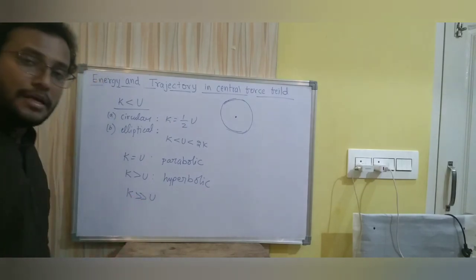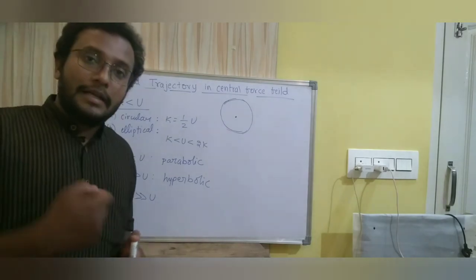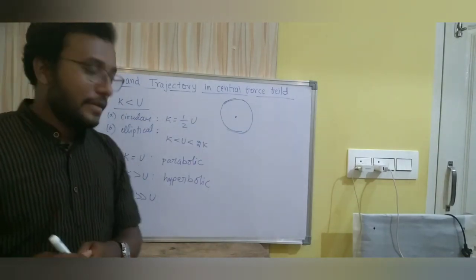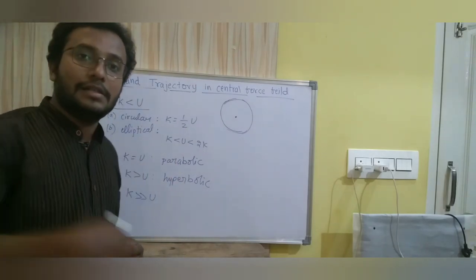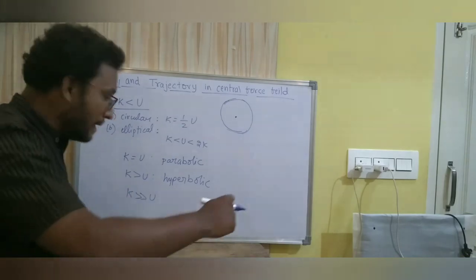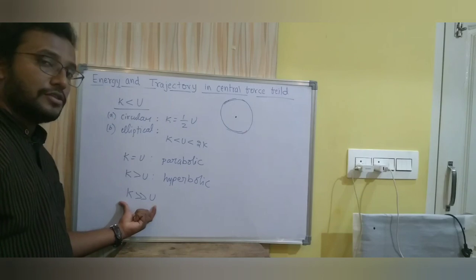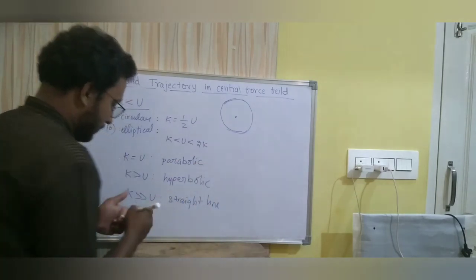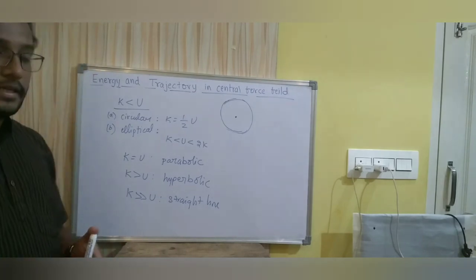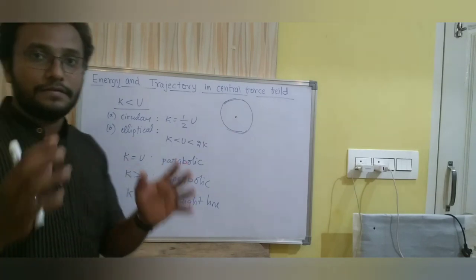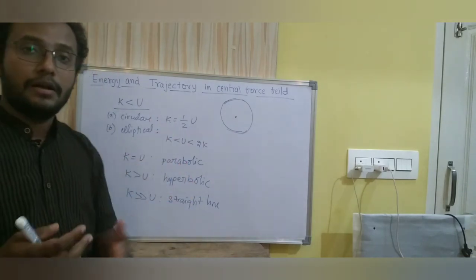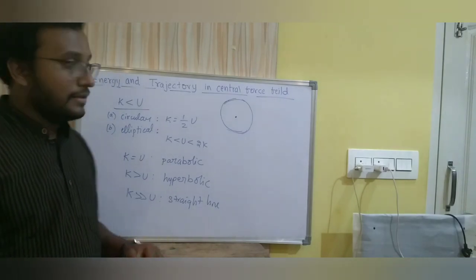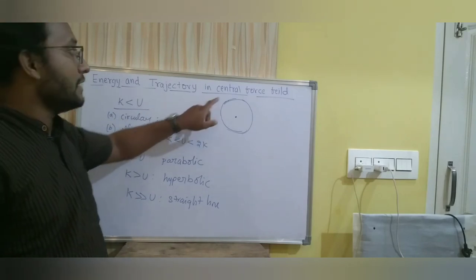If kinetic energy is very much greater than the potential energy, the incoming particle will not be affected by the forces at all. It will not be deflected toward the source of the central force field but will simply continue in the direction it was already going. Therefore, if kinetic energy is very much greater than potential energy, the path of the incoming particle inside the central force field will be a straight line. These are the different paths depending on the ratio of kinetic energy to potential energy, and that is why we say energy decides the trajectory of a particle inside a central force field.